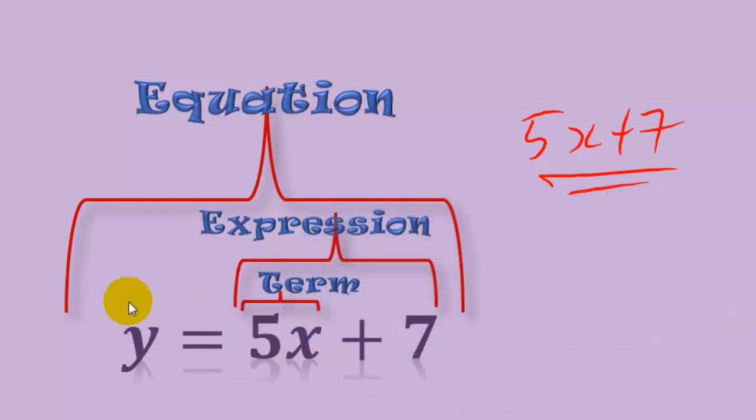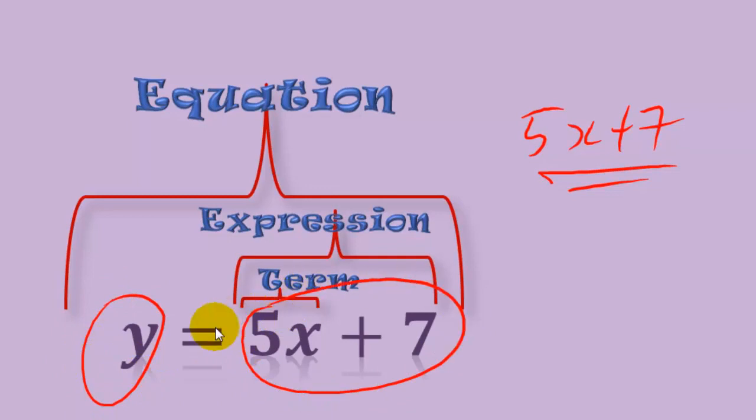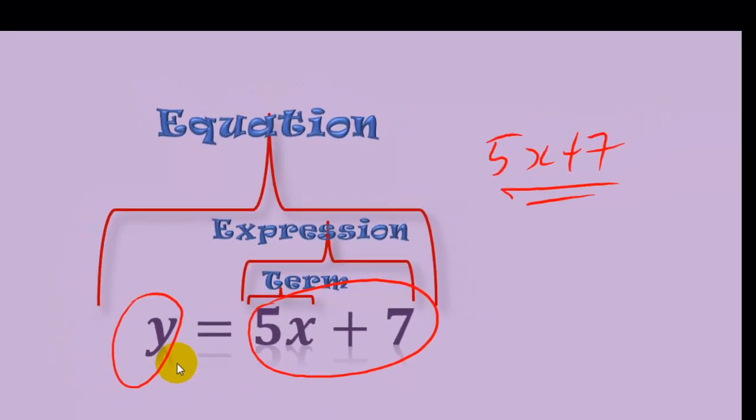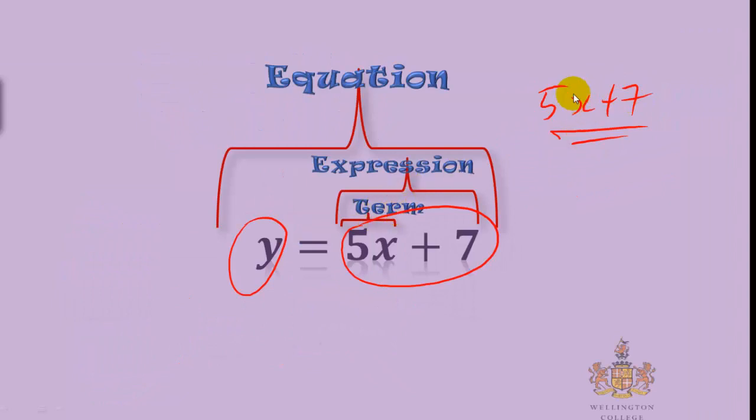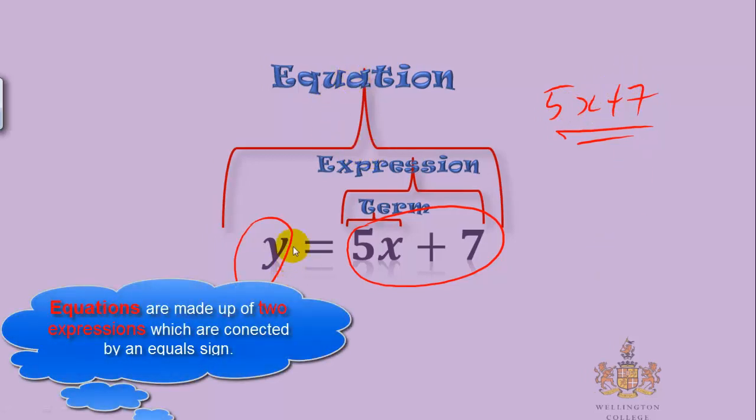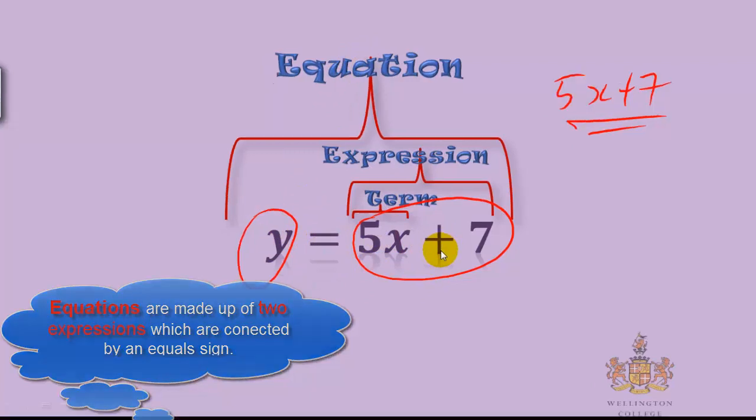An equation is made up of two expressions. We have the y and we have the 5x plus 7, and those make up the equation. The expressions have the terms in them, which are the 5x and the 7 in this case, separated by pluses or minuses. And we can also separate all the terms in the equation by using an equals, a plus, or a minus.